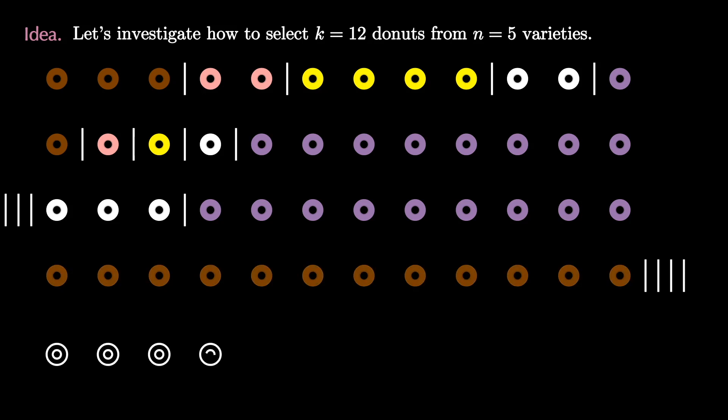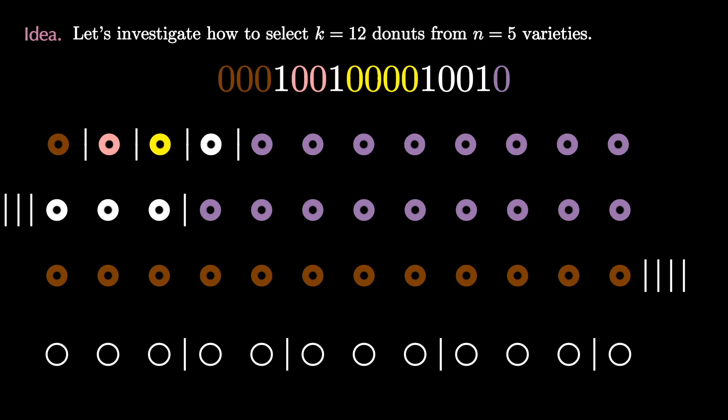Thus we have seen that every arrangement of donuts that we might be interested in comes from taking 12 plain donuts and placing four dividers like this. But as we watch this happen we notice that the donuts can be replaced by zeros and the dividers can be replaced by ones. And now we're just looking at a binary string of a certain length with a certain number of ones. So for example in our previous lists we can take all the donuts and replace them with zeros and all the dividers and replace them with ones.